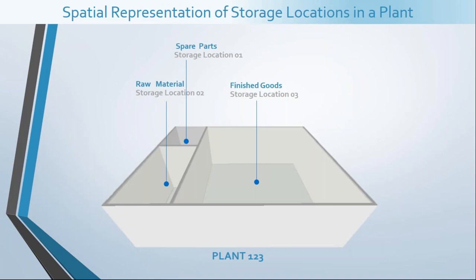To start with, let's understand the situation of a hypothetical plant — let's call it plant 123. This plant has to deal with three different types of materials: it stores manufactured products in the finished goods section, manages an inventory of raw materials to manufacture its finished products, and also maintains a small inventory of spare parts to service products already sold to customers. The plant maintains these three material types in three separate storage locations — storage locations 1, 2, and 3 for spare parts, raw material, and finished goods respectively.